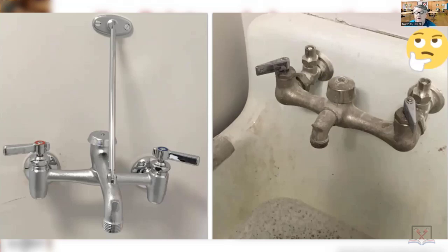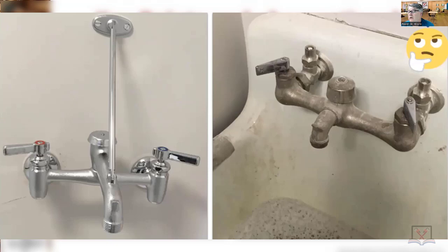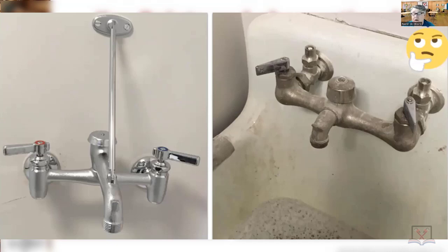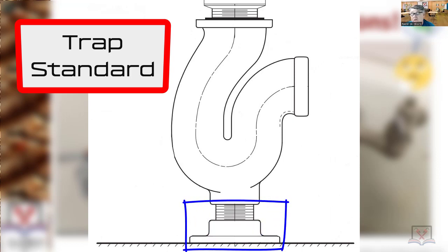So here are some key points and observations: mop receptor, janitor sink, or slop sink. Over here, does anybody know what would be under there for a trap? Trap standard — very good. Some of you are going to look at this and go, 'trap standard, what does that mean?' You need to get familiar with a trap standard because there are several questions on your exam about it. It's a big trap, usually epoxied, sometimes cast iron, with a stand — you use a close nipple, usually two inch or two and a half inch, that sits on the floor.